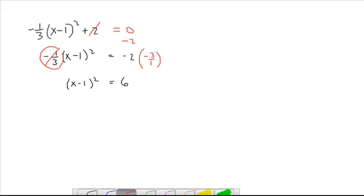Then you need to get rid of this square by taking the square root. Then x minus 1 equals square root of 6. This is not a perfect square, so I'm just going to leave it as square root of 6.